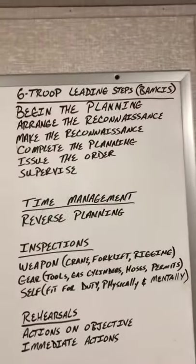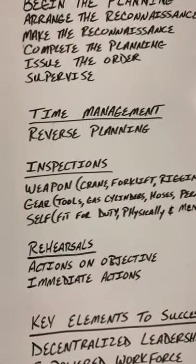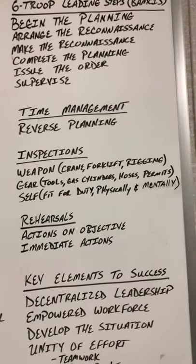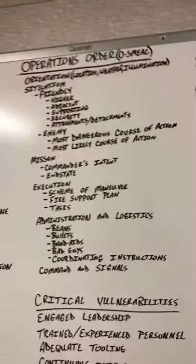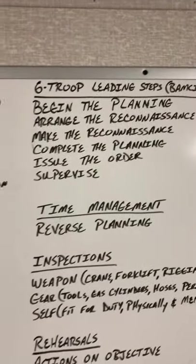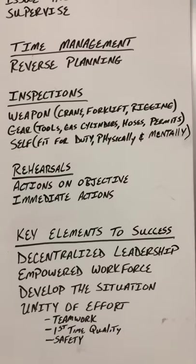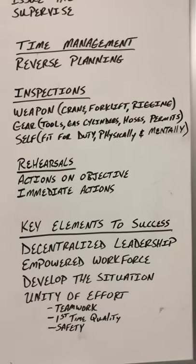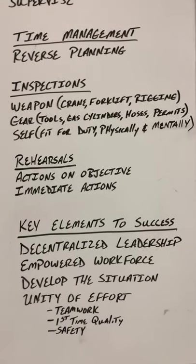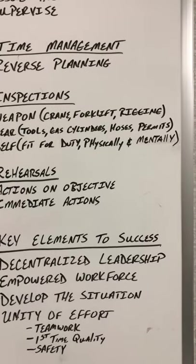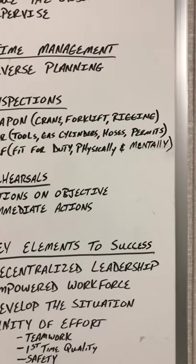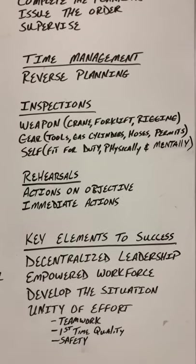When given our initial tasking, we go through the six troop leading steps and utilize a reverse planning methodology to ensure we have adequate time to accomplish all implied tasks — so the men aren't rushed, avoiding that time pressure precursor. Once we've established and issued the order, we conduct inspections. Using the weapon-gear-self methodology from the military: weapon covers the big impactful items — cranes, forklifts, and rigging — ensuring certifications are current, labels are accurate, and forklift inspection sheets are up to date.